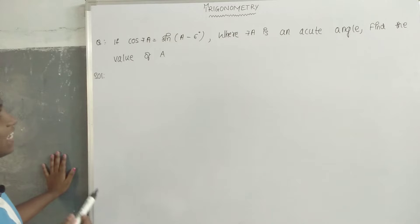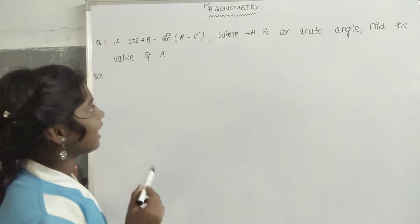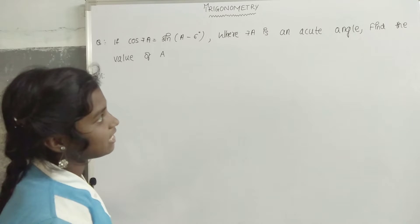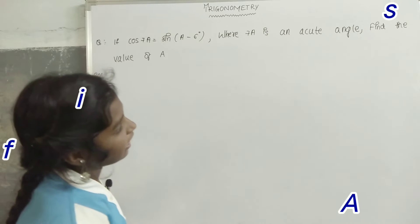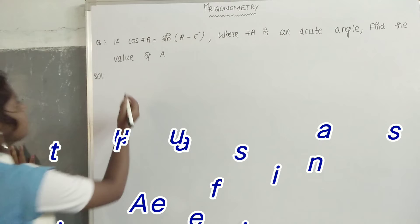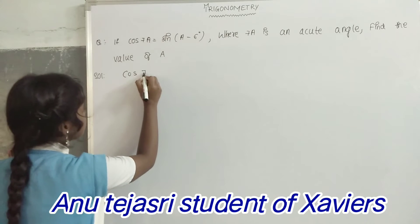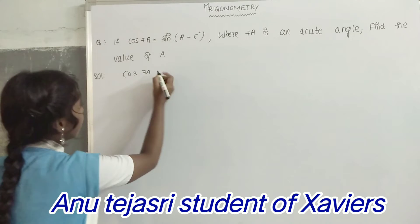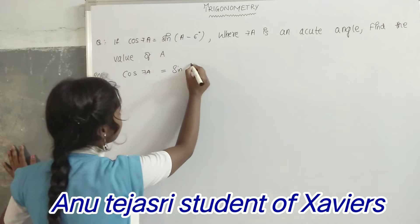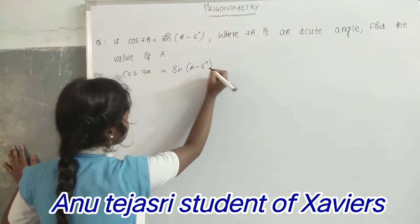If cos 7a is equal to sin(a minus 6 degrees), where 7a is an acute angle, find the value of a. Here, cos 7a is equal to sin(a minus 6 degrees).